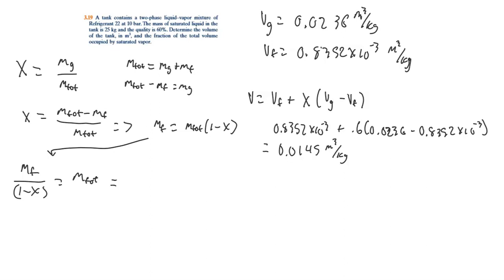So now if we plug in our numbers, 25 over 1 minus 0.6, and that will give us 62.5 kilograms.